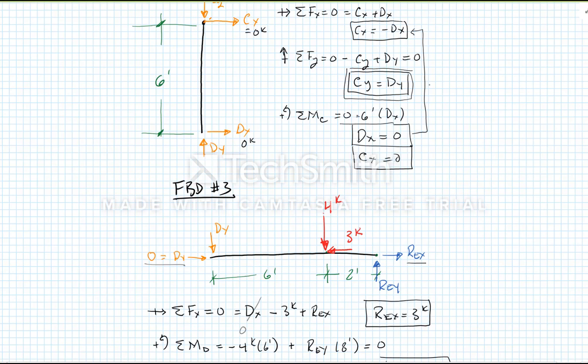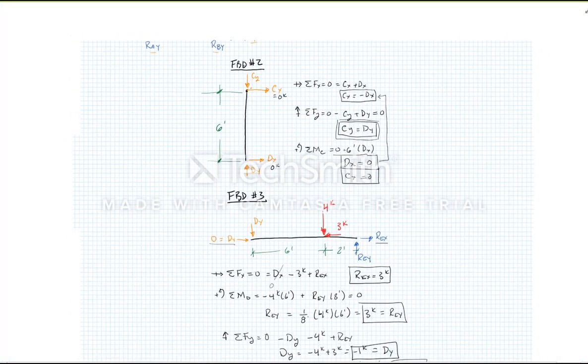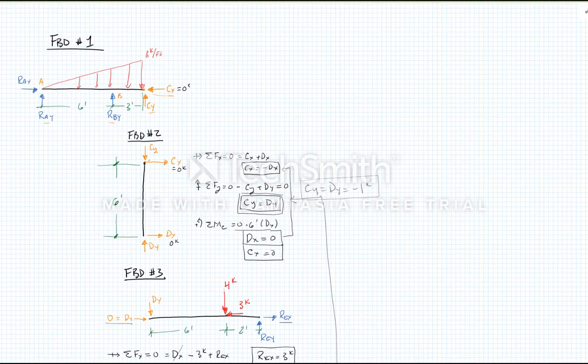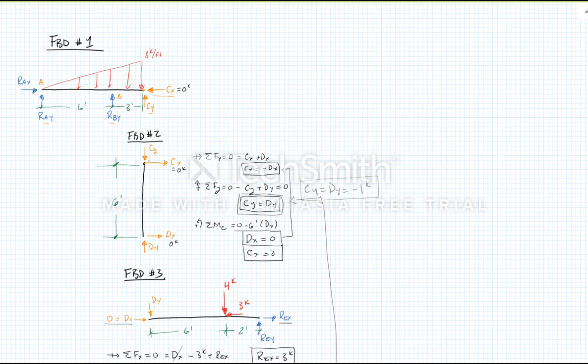If we jump up here, let me zoom out a little bit. We can do some back substitution. We can take this and plug it in here, and we get CY equals DY equals minus one kip. Let's keep that negative in there so we can track it through.